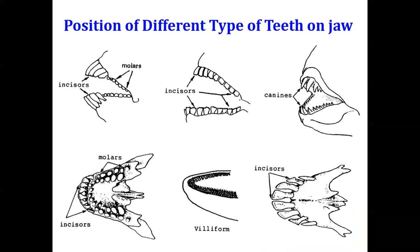Looking at the position of these different types of teeth on the jaw: incisors are present in the front row on the upper and lower jaw; molars are in the back rows; canines have their own arrangement on upper and lower jaw; villiform teeth are arranged in multiple rows, short and numerous; and there is also a combination arrangement of molars and incisors — these are the different possible positions of the various tooth types on the jaw in different fishes.